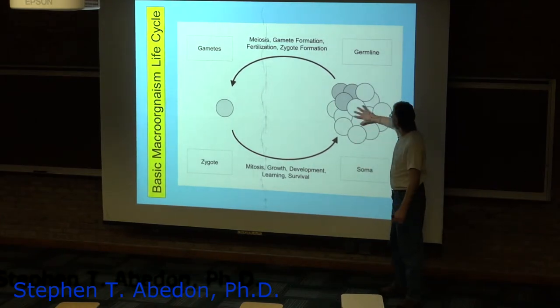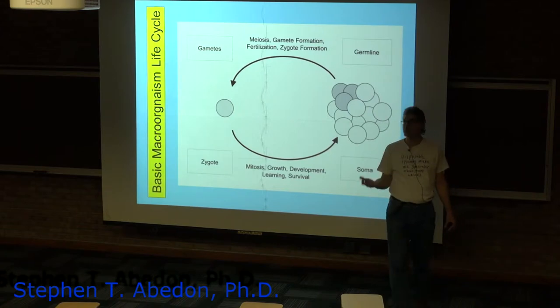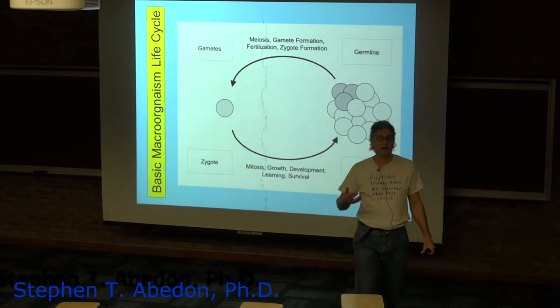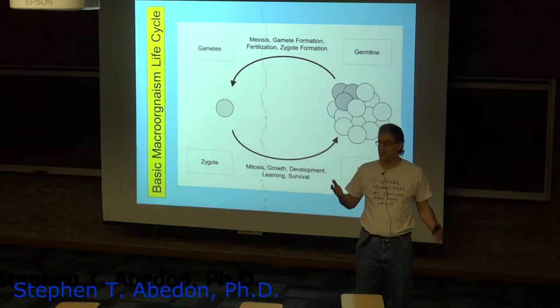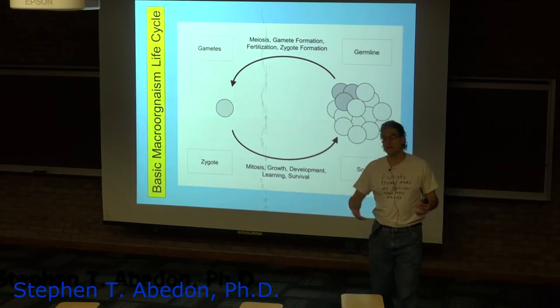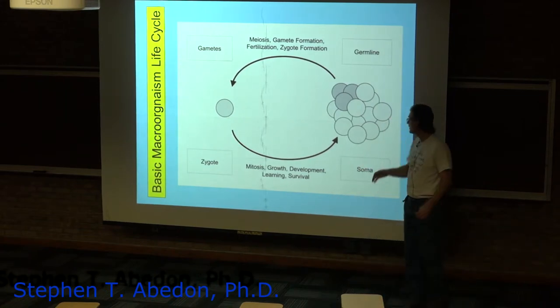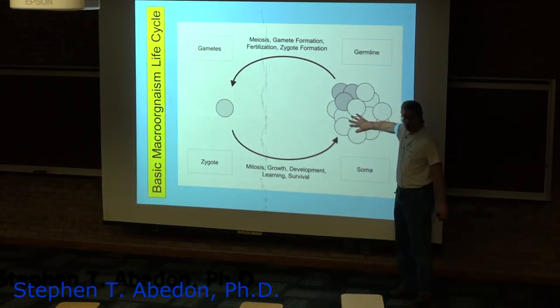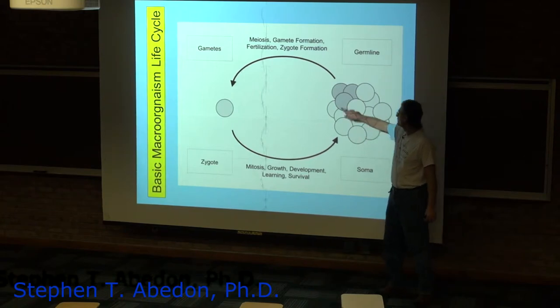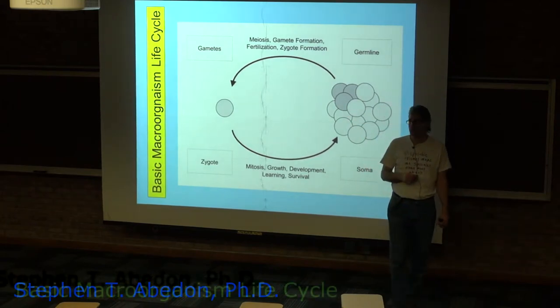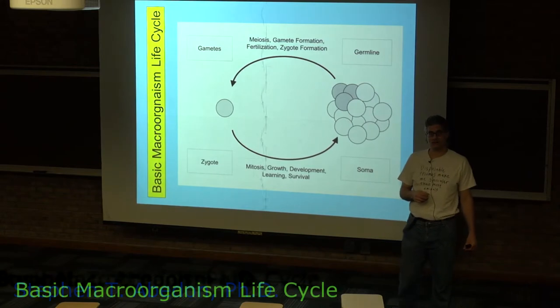So, the somatic cells, even though they don't contribute to the next generation, the fact that the reproductive cells have the same genotype means that their genotype is going to survive anyway, not through their own long-term survival, but through making sure that the germline survives and makes it to the next generation.